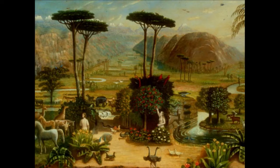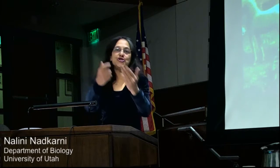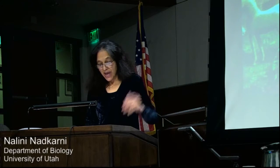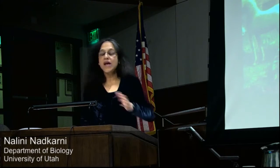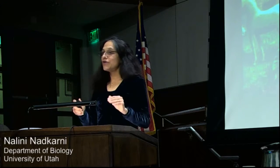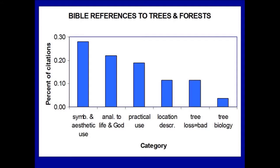What I decided to do in linking the ecological values of trees to the spiritual and religious values of trees was to go to the holy scriptures of the world religions and ask, from those writings and that understanding of the world, what are trees all about? What are the spiritual and religious values of trees to Judaism, Christianity, Hinduism, Buddhism, and Islam? I began by reading the Old Testament, and on the very first page I found two very important trees — the tree of life and the tree of knowledge of good and evil. I downloaded the Old Testament from the web and searched for the words 'tree' and 'forest,' and found that there were 328 verses and lines that concerned those words. Being a scientist, I had to categorize them — symbolic and aesthetic use, analogy to life in God, practical use like eating fruits, location descriptors, tree loss is bad, and finally tree biology.